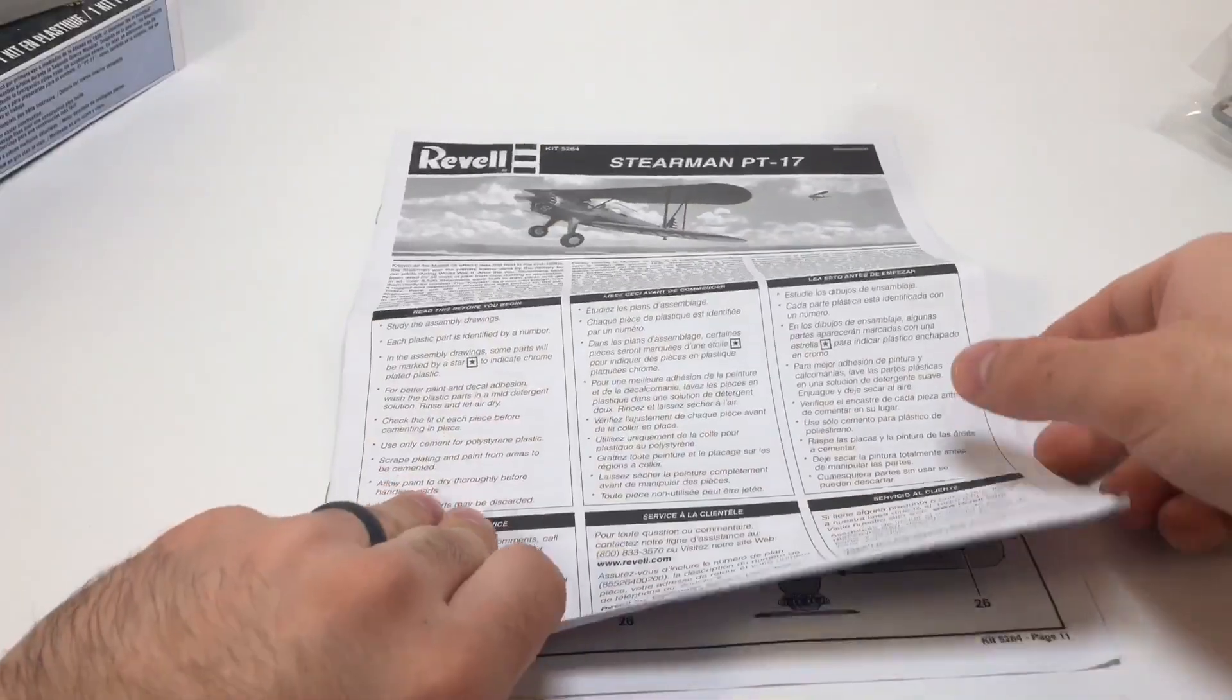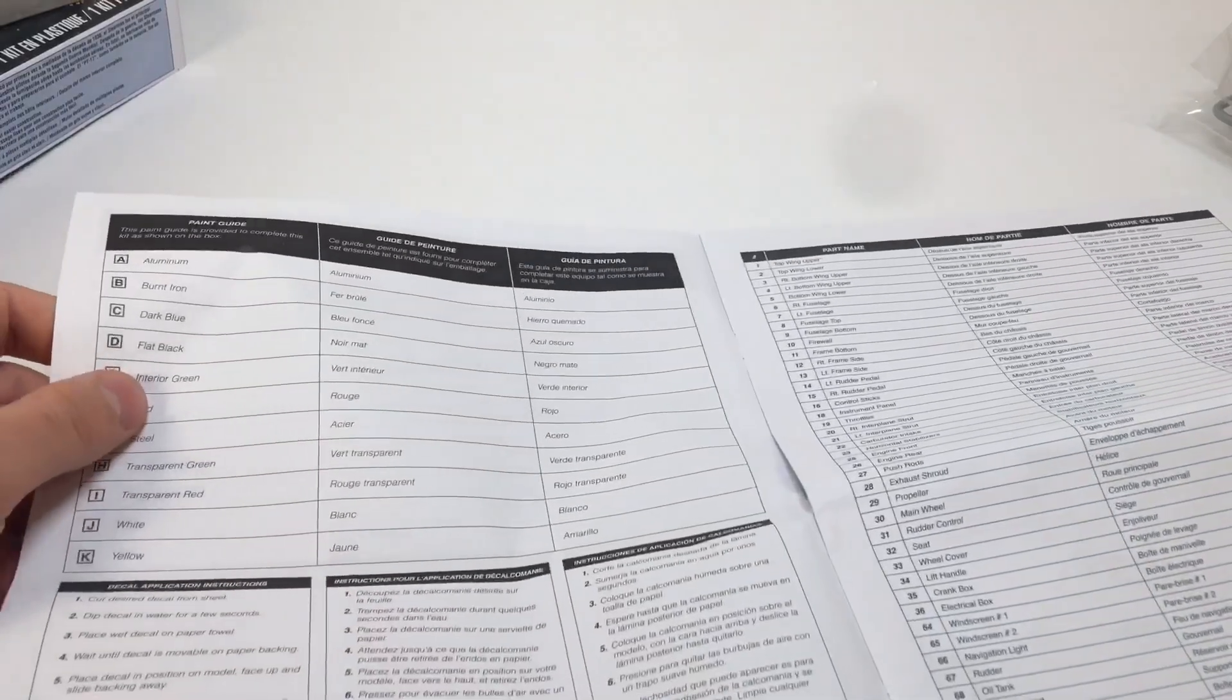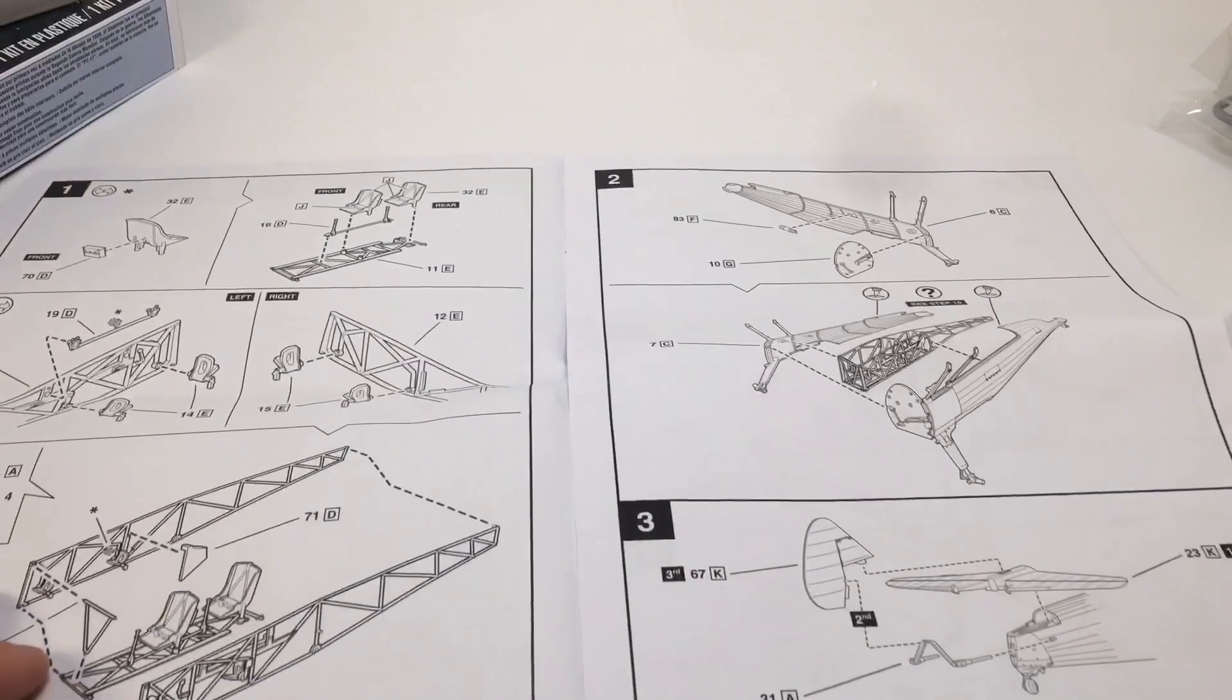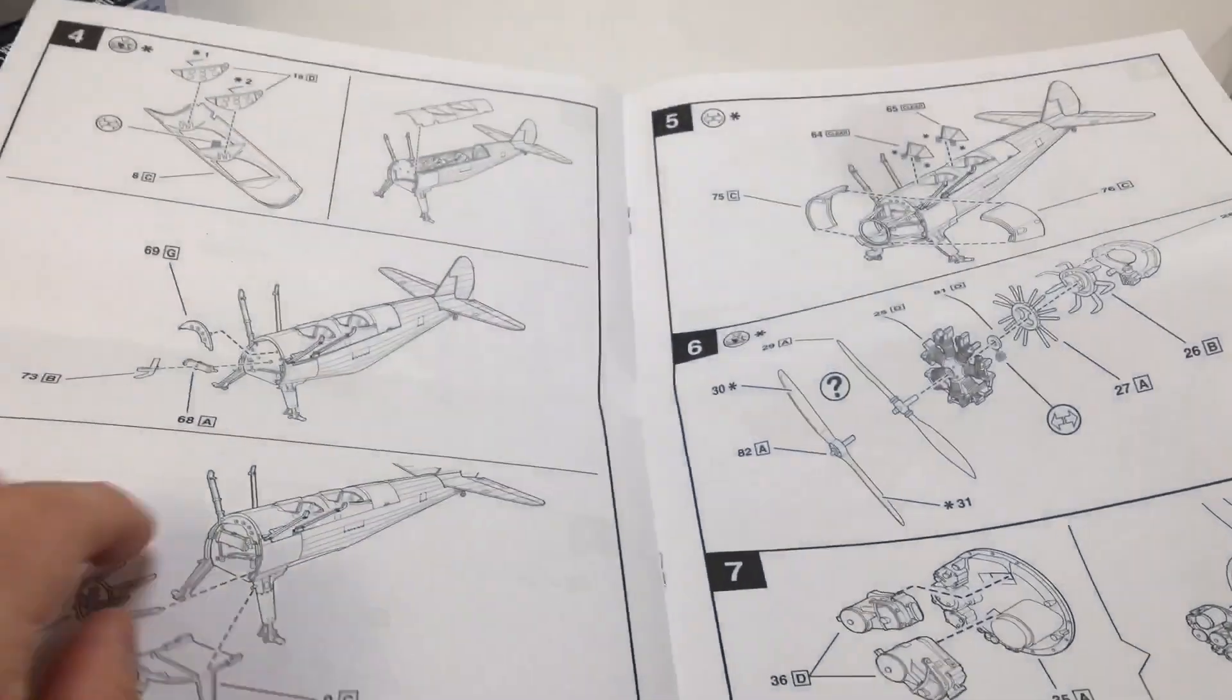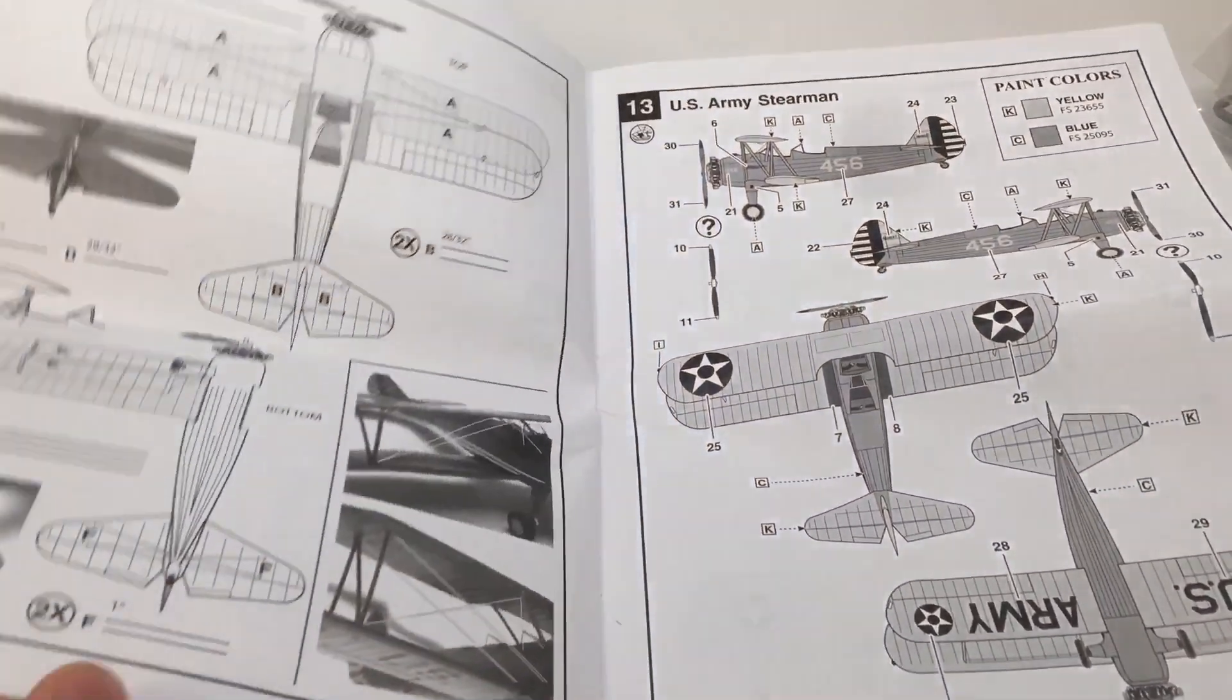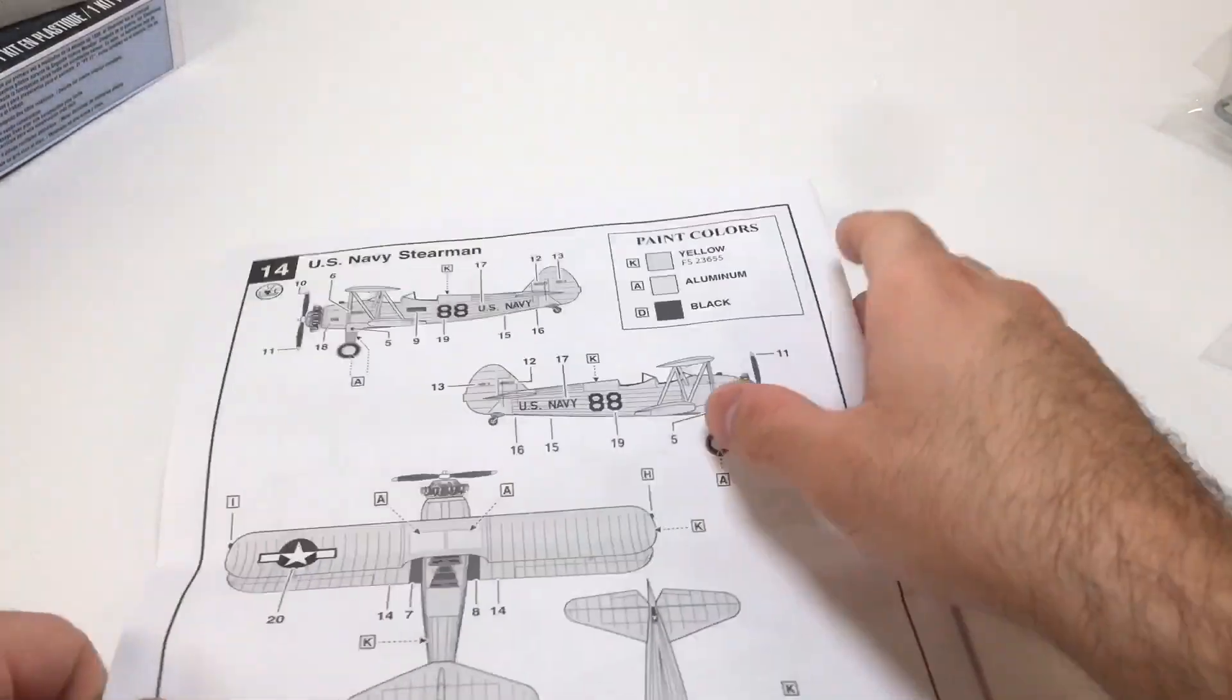Here's the instruction pack. First page tells you the paint guide. It tells you all the parts on this page. It begins in step one. There's a quick skill guide. There's 11 pages and 14 steps.